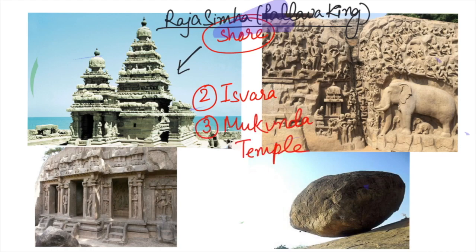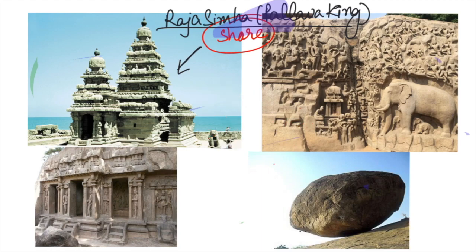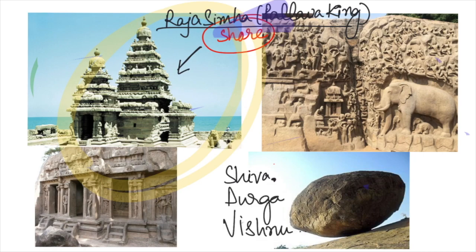The most important of these is the Shore Temple complex, which consists of a large temple, a small temple, open halls, gateways, and other elements. The main shrine is dedicated to Shiva, and also to Durga and Vishnu.